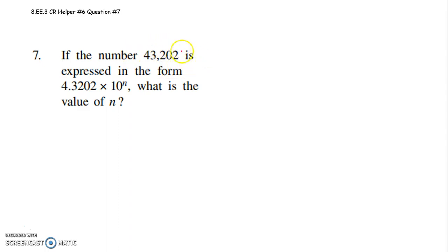To take this number from standard form and write it in scientific notation, your first factor has to be a number greater than 1 and less than 10. So I would do 4.3202. 4 point something is greater than 1 and less than 10 times 10 to some power.